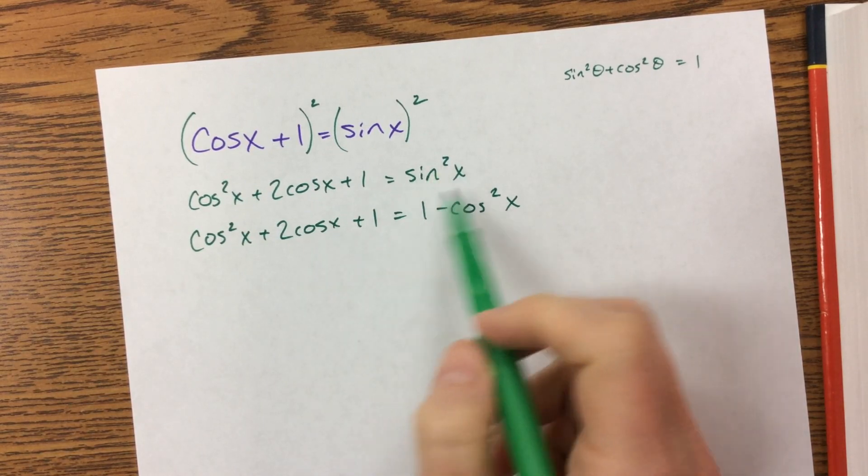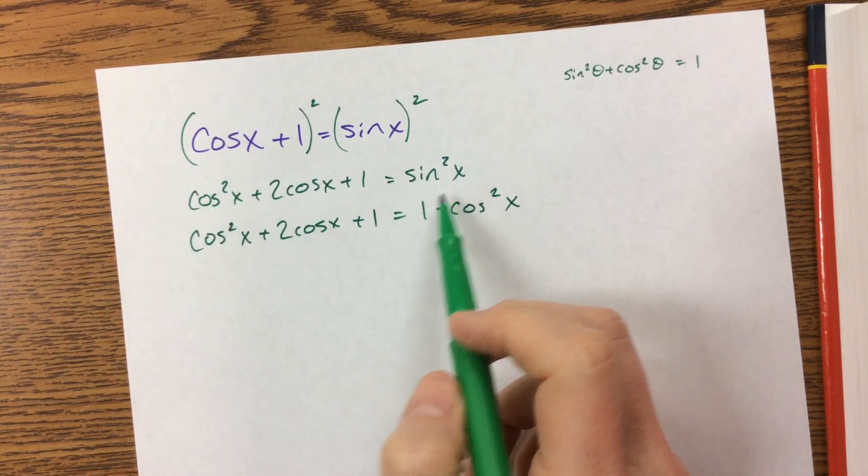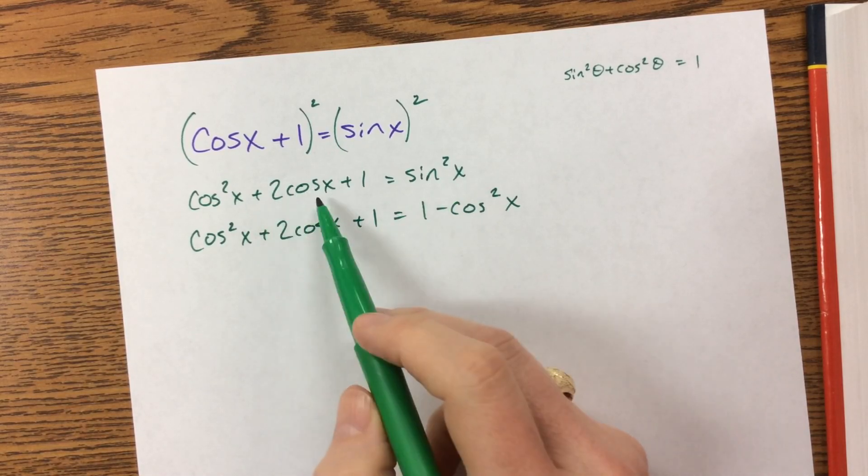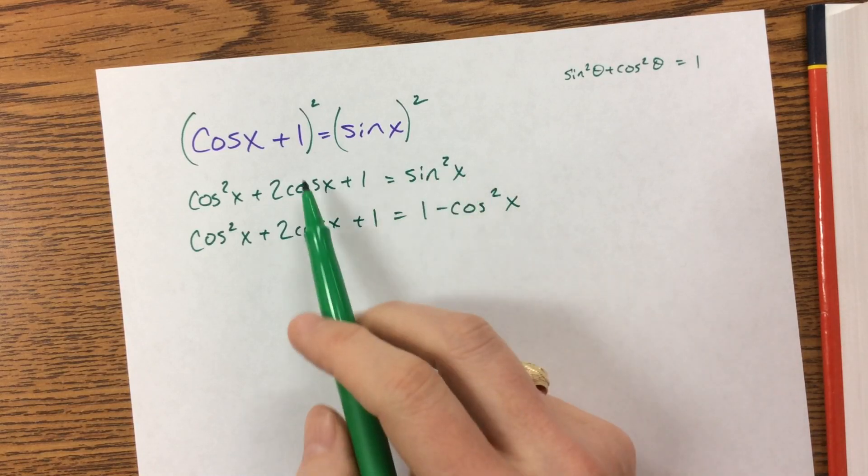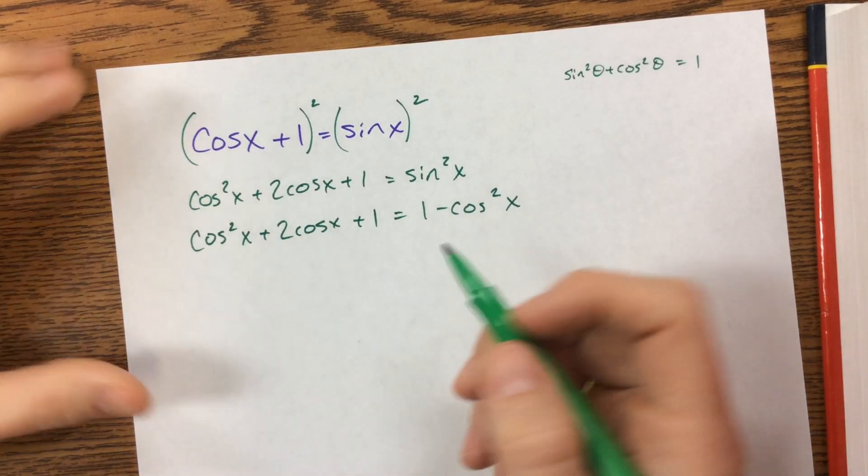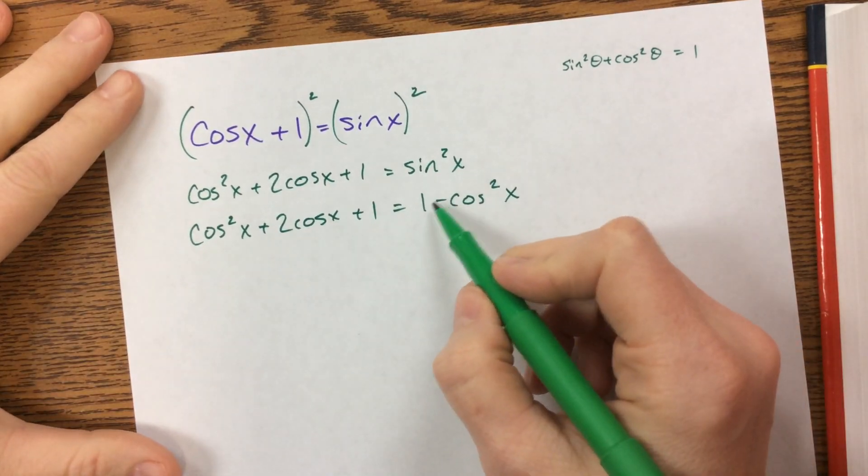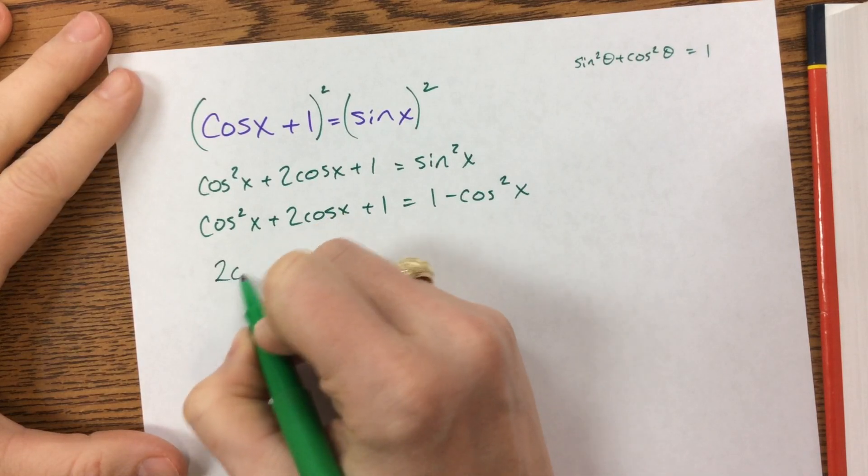And I decided to change sine in terms of cosine rather than cosine in terms of sine, because I had this term right here that was just cosine to the first power. If I had tried to go in the direction of sine, then I'd have to square things again, and life would just get complicated, so it's not worth that.